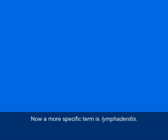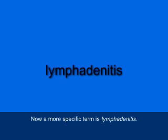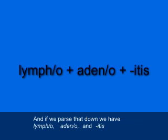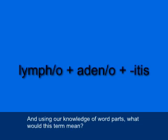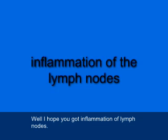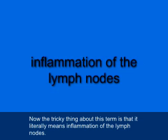A more specific term is lymphadenitis (L-Y-M-P-H-A-D-E-N-I-T-I-S). If we parse that down, we've got lymph, adeno, and itis. Using our knowledge of word parts, this term means inflammation of lymph nodes. The tricky thing about this term is it literally means inflammation of the lymph nodes.